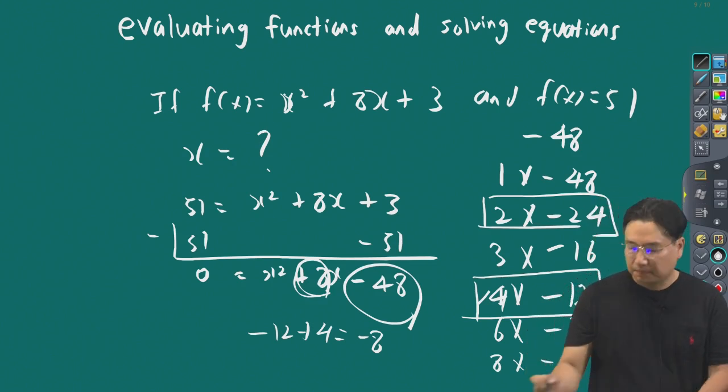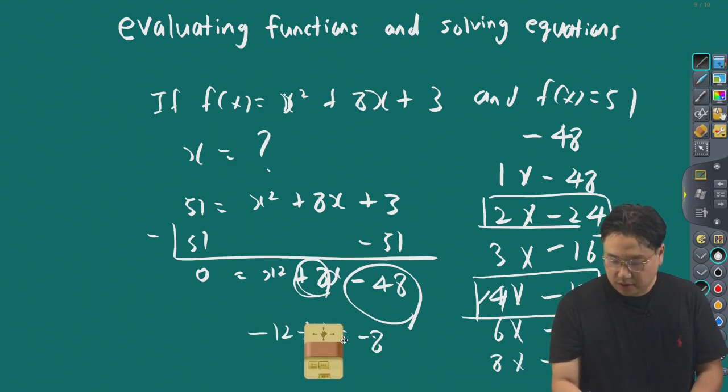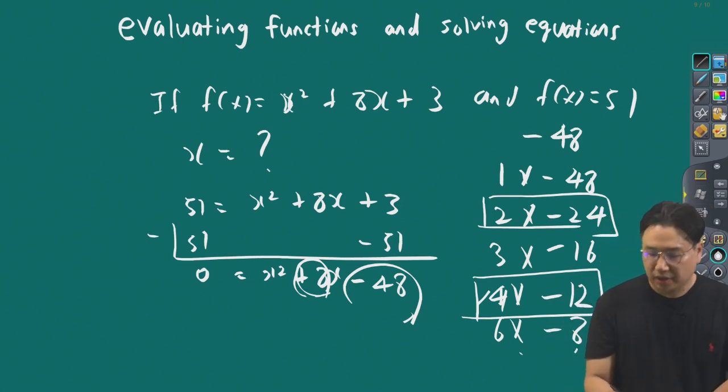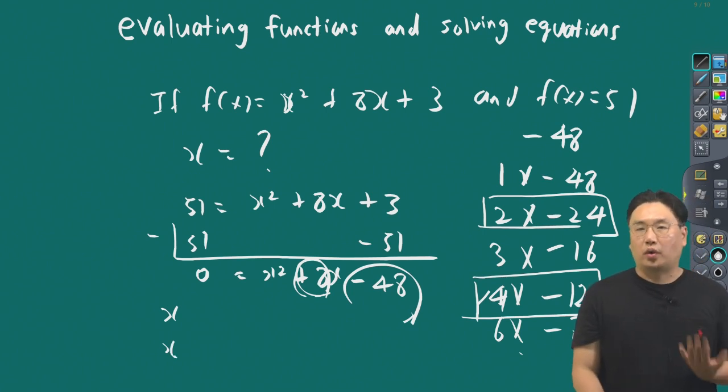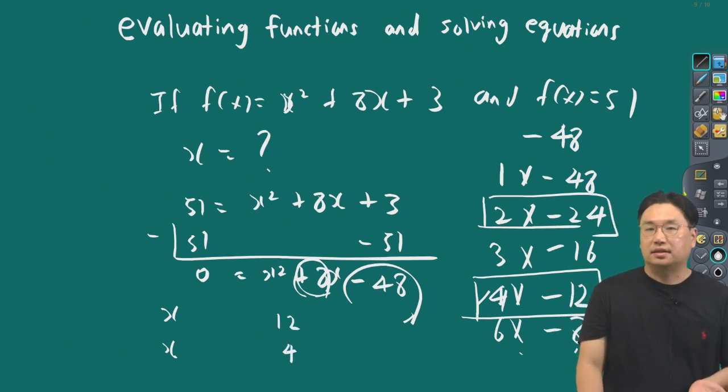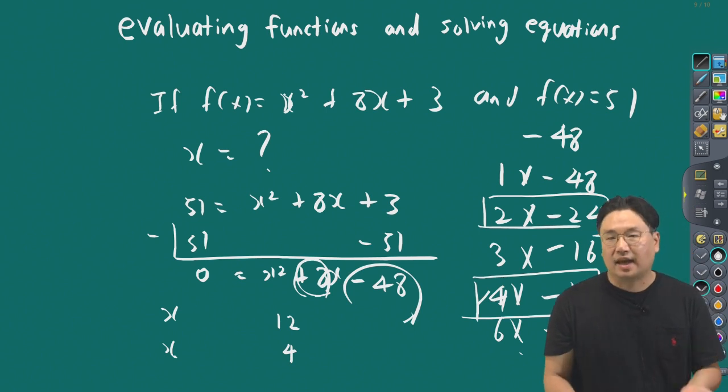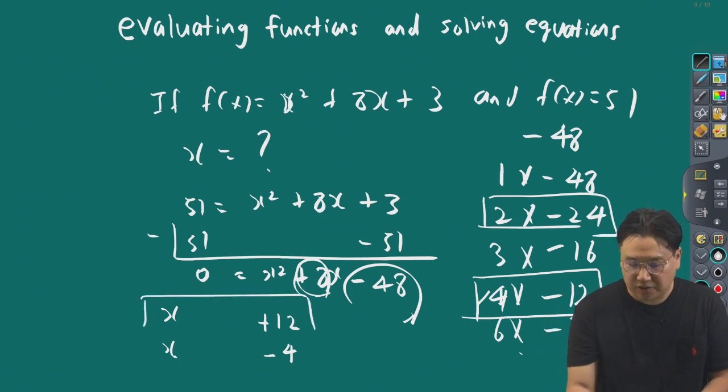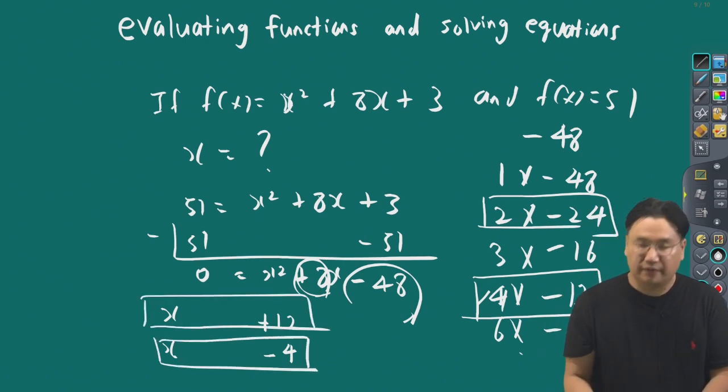Using the cross section method: x times x gives x squared, and 12 times 4 is 48. To get plus 8, we use plus 12 (reversing the sign from minus 12) and minus 4, which gives us plus 8. This is how you set up the formula.